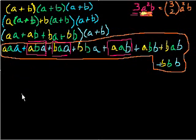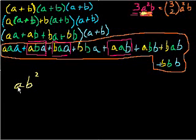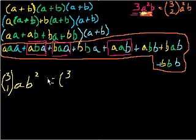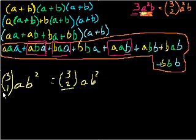For the ab² term, you could say: how many ways can I pick a exactly once from three things? That's 3 choose 1. But equivalently, how many ways can I pick b twice from three things? That's 3 choose 2 for ab². When you work these out, they both equal 3 — and that's why there's symmetry there. The combinations all work out.